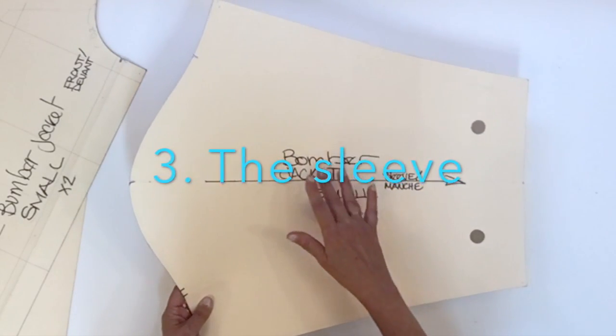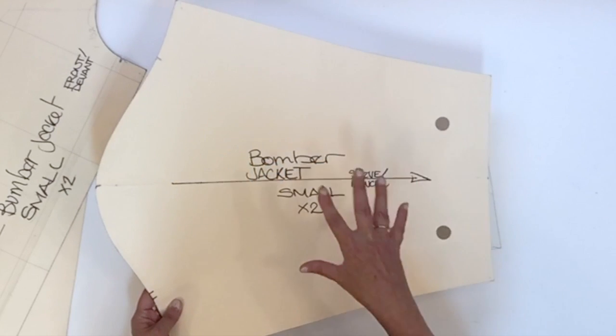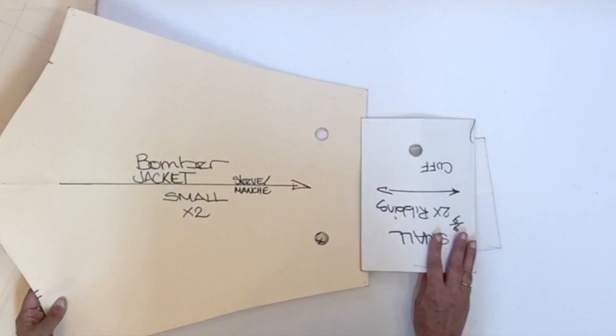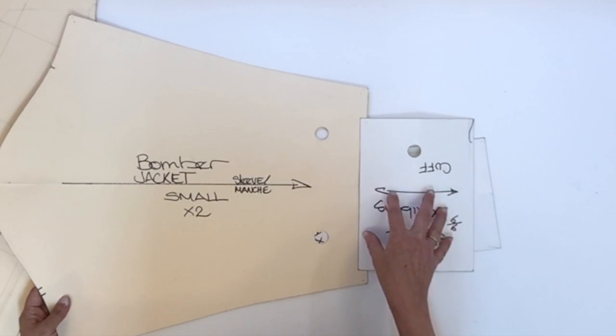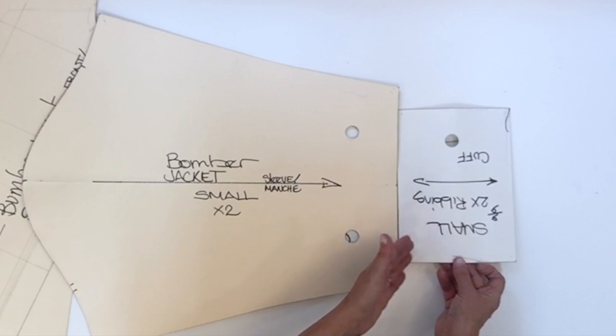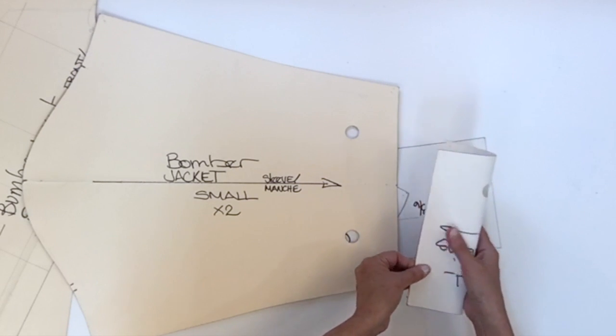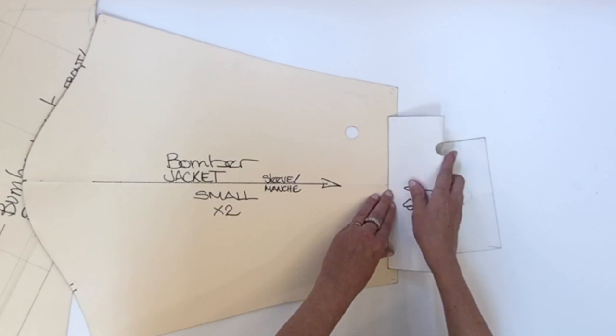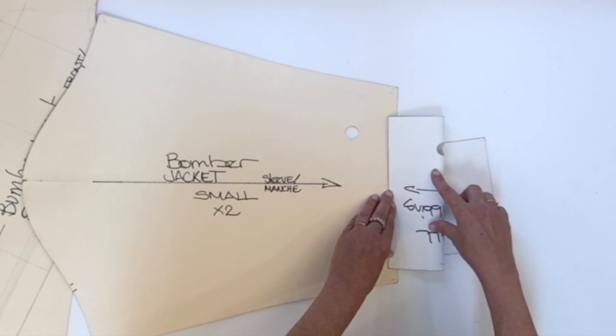The next piece is the sleeve that you have to cut two times. This sleeve length is according to sewing a ribbing cuff at the bottom of your sleeve. If you don't want the ribbing, you could elongate your sleeve by half the measurement or a little less than half the measurement of the ribbing piece.